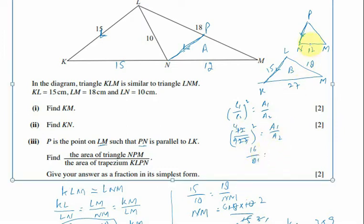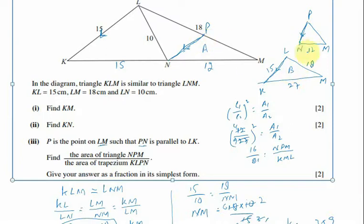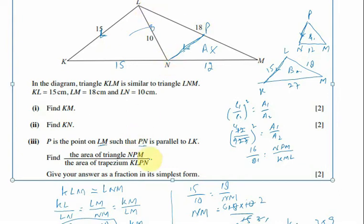So A1 is the area of triangle NPM, and A2 is the area of the big triangle KLM. If we remove the smaller area from the whole triangle, what is left is trapezium KLPM.